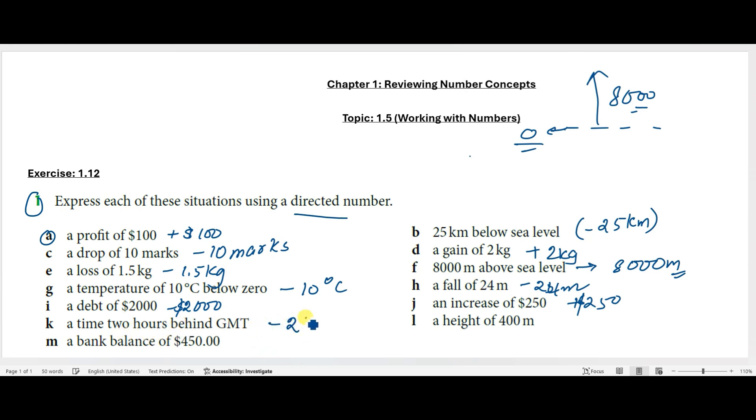A height of 400 meters can be written as +400 meters. A bank balance of $450 can be written as +$450.